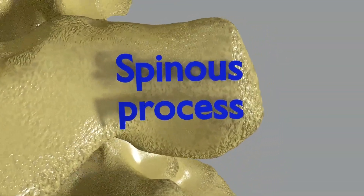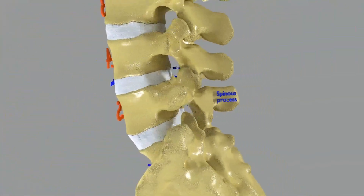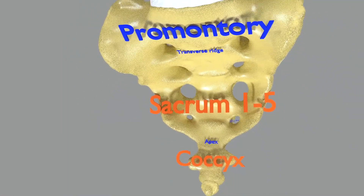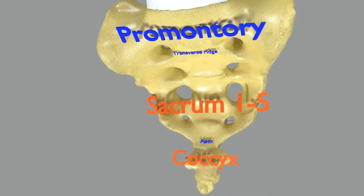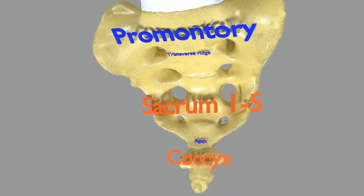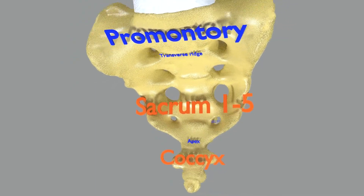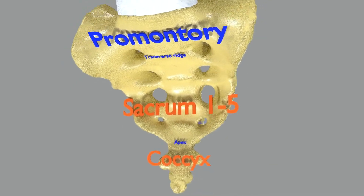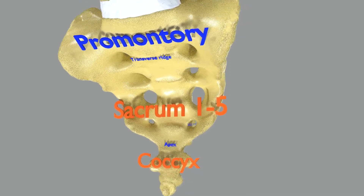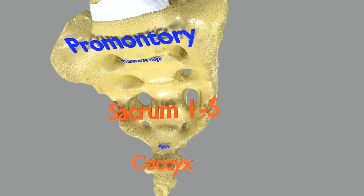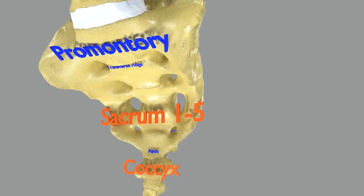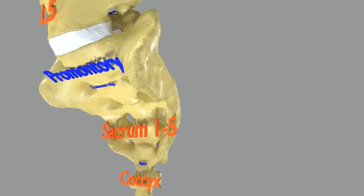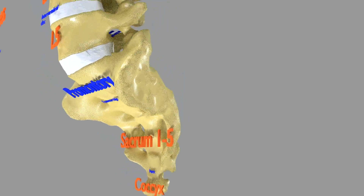Below L5, the fifth lumbar vertebra, there is a bony structure known as the promontory, which is a part of the sacrum. The five sacral vertebrae in the human body are fused together, forming transverse ridges at the sites of fusion. The lowest vertebra, known as the coccyx, is a single structure.